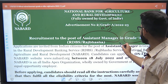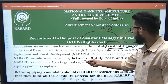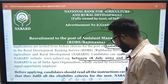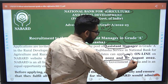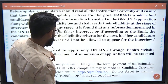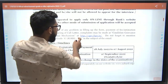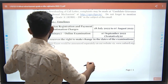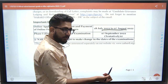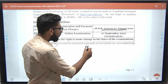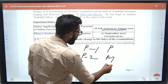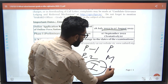For the Assistant Manager Grade A post, registrations are open from 18th July to 7th August — so 7th August is the last date for registration. The NABARD exam is in different phases: Phase 1 is Prelims, Phase 2 is Mains, and finally there is an Interview, which is of 50 marks.